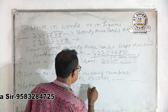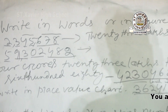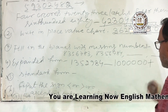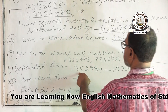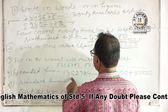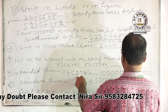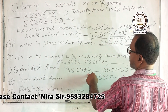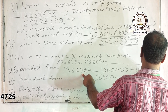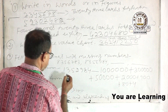The number is 1352986, which has seven digits. To expand it: write 1 followed by six zeros (1,000,000), plus 3 followed by five zeros (300,000), plus 5 followed by four zeros (50,000), plus 2 followed by three zeros (2,000), plus 9 hundred, plus 8 tens, plus 4 ones. That gives the expanded form.